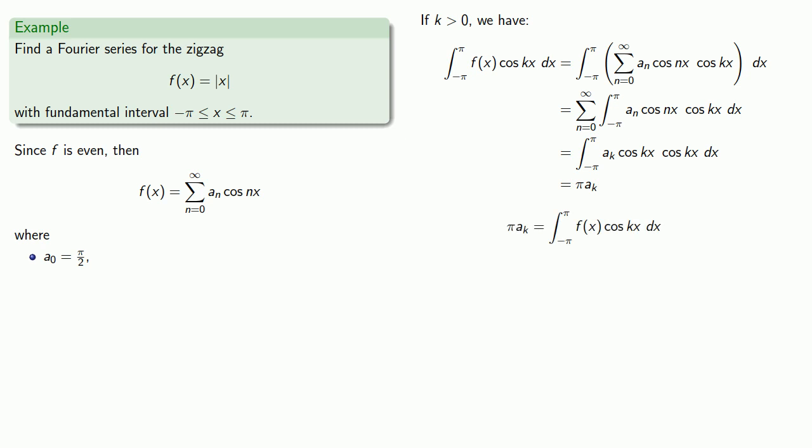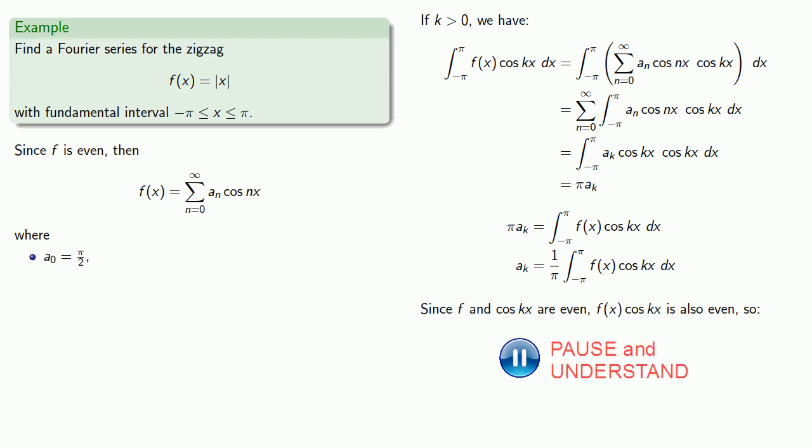So π times aₖ is the integral from minus π to π of f(x), cosine kx, or aₖ is 1 over π times this integral. Since f and cosine kx are both even functions, we know that their product is also going to be an even function. So f(x) cosine kx is even, which means the integral from minus π to π is going to be the same as two times the integral from zero to π.